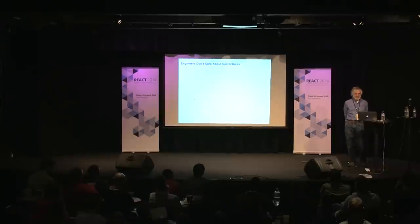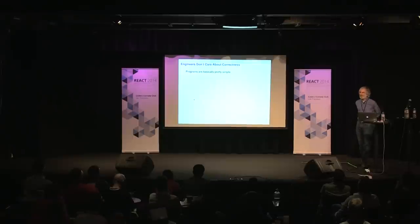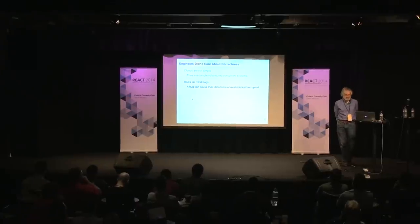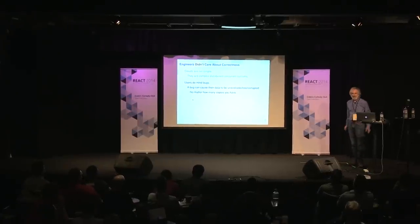Engineers don't care about correctness? Programs are basically pretty simple? Users don't mind a few bugs? And any bugs not found by testing aren't really likely to occur? Well, engineers didn't care about correctness. But clouds are not simple — they're complex distributed concurrent systems, really big skyscrapers. Users do mind bugs. Companies are betting their business by putting their data on the cloud. A bug can cause their data to be unavailable, lost, or corrupted — no matter how many copies you have. If you've got a basic bug, just putting some extra copies around is not going to buy you reliability.